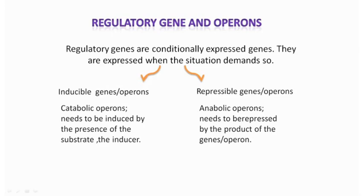Inducible operons are like the lac operon — a catabolic operon — meaning when the substrate is present, the enzymes for degradation of that substrate need to be synthesized. These operons normally remain switched off, and when the substrate arrives they are induced by the substrate or a derivative of the substrate to be expressed and switched on. That's why they are called inducible.